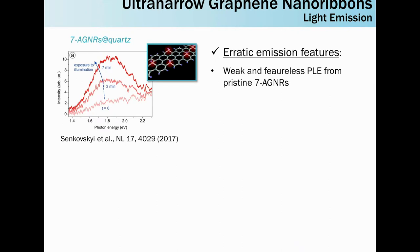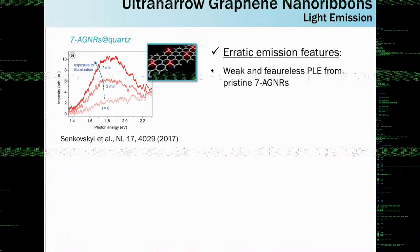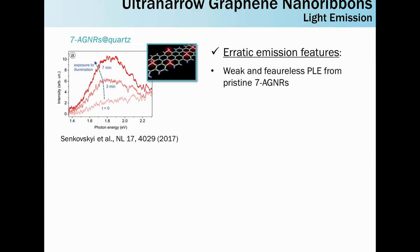So what about emission? There are a few reports about emission of these systems with very erratic features. For instance, these seven armchair graphene nanoribbons, which was the first one synthesized in 2010, showed very weak, very poor emission properties. The emission spectrum, the PL spectrum, is weak and featureless. You can only retrieve some luminescence if you expose your system to blue laser for a certain time or if you hydrogenate your system. All the emission that is observed is related to defects of the SP2 network.